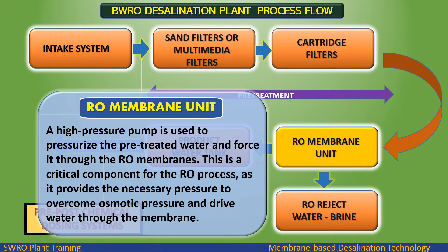In the RO Membrane Unit, a high-pressure pump is used to pressurize the pre-treated water and force it through the RO membranes. This is a critical component for the RO process, as it provides the necessary pressure to overcome osmotic pressure and drive water through the membrane.